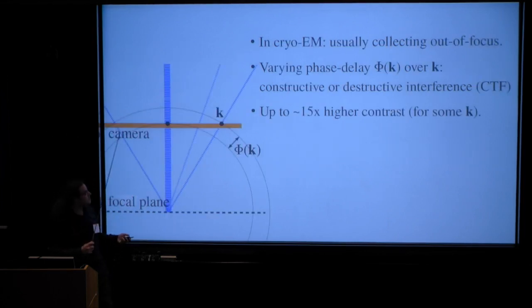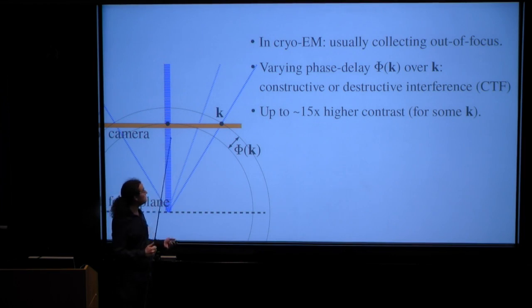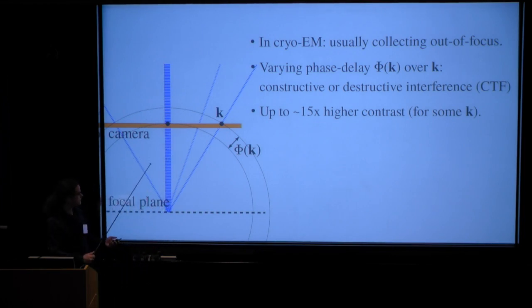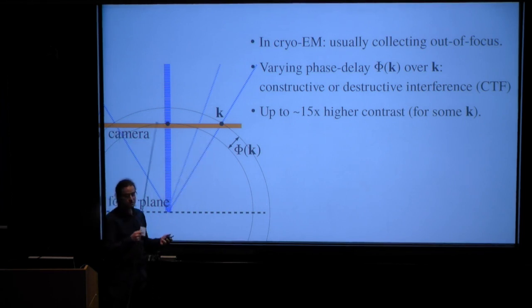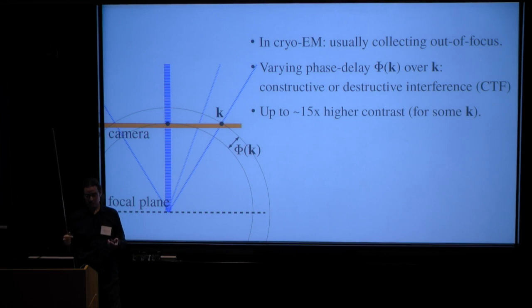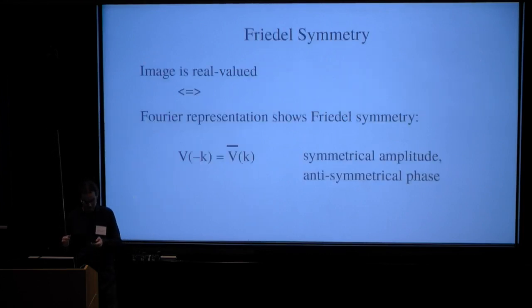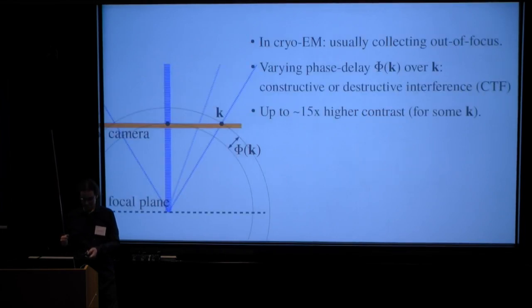In cryo-EM, we of course like to take images out of focus. And then if the scattered rays are in phase down here, then they can no longer be in phase up there, so they all have different phases compared to each other. Their phase shifts, their phase delay versus the unscattered ray varies. And this is what gives rise to our CTF. However, in the peaks and the troughs of the CTF, we obtain about 15 times higher contrast this way.